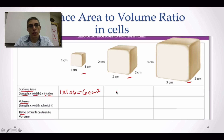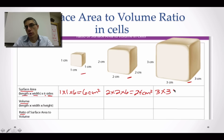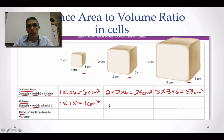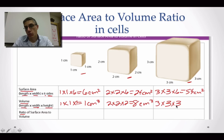The second cube gives us 2 times 2 times 6: that's 4 times 6, equaling 24 centimeters squared. The third cube gives us 3 times 3 times 6: that's 9 times 6, equaling 54 centimeters squared. For volume, we use length times width times height. The first cube is 1 times 1 times 1, giving 1 centimeter cubed. The second is 2 times 2 times 2: 4 times 2 equals 8 centimeters cubed. The third is 3 times 3 times 3: 9 times 3 equals 27 centimeters cubed.